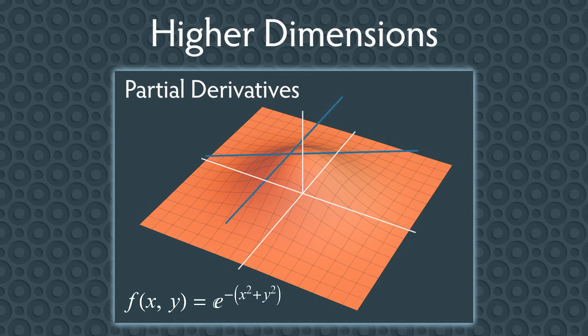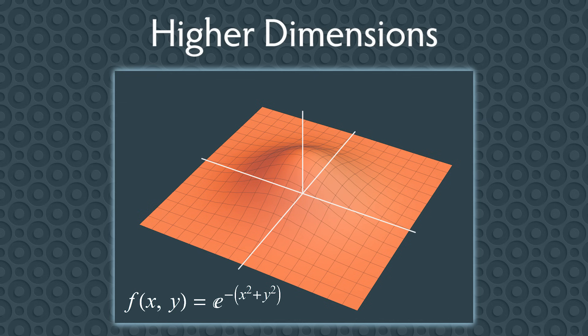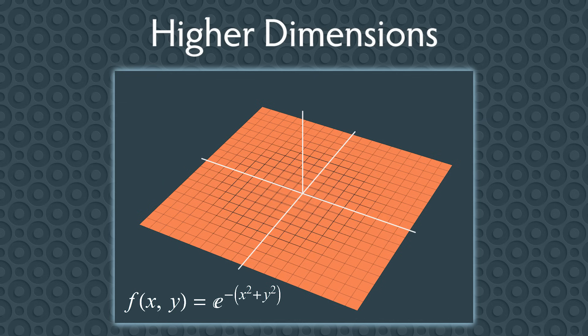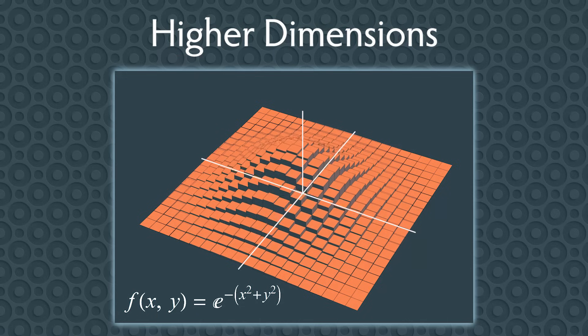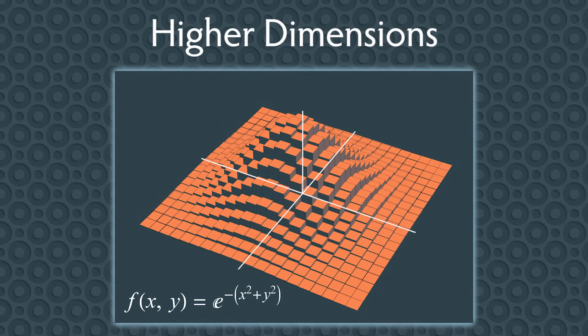We'll also need to generalize the integral. The region below a surface is three-dimensional. It has a volume, not an area. To compute the volume, we'll approximate it using a bunch of skinny boxes. To sum up all the volumes, you'll need to use a double integral because the boxes are spread out in two dimensions.